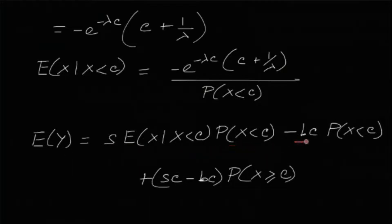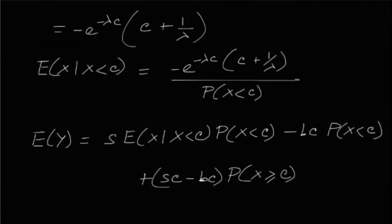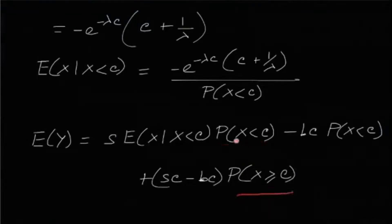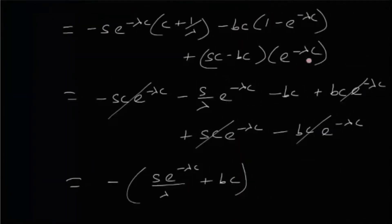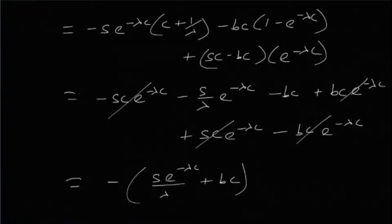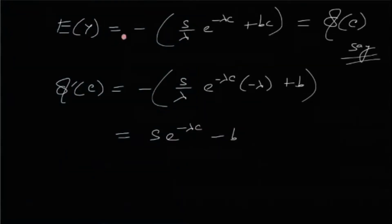Coming back to the original expression for expectation of Y, we substitute all known values. P(X < C) equals 1 minus e to the minus lambda C, and P(X ≥ C) equals e to the minus lambda C. After substituting everything, we get: expectation of Y equals negative S over lambda times e to the minus lambda C, plus BC.